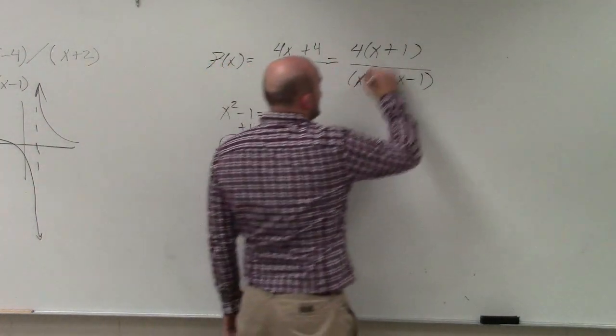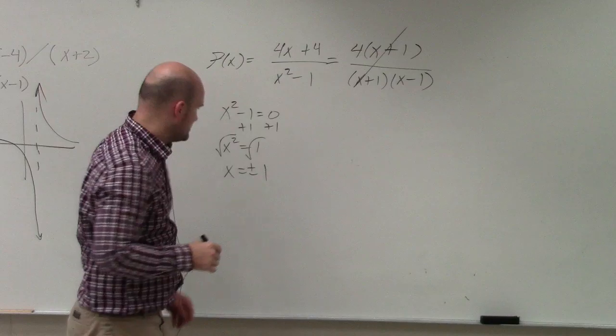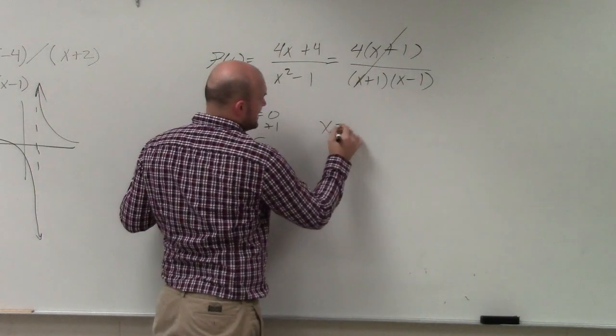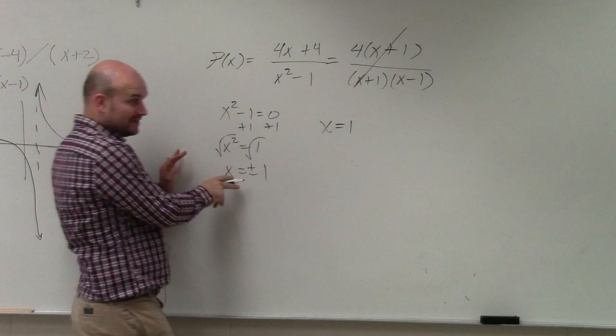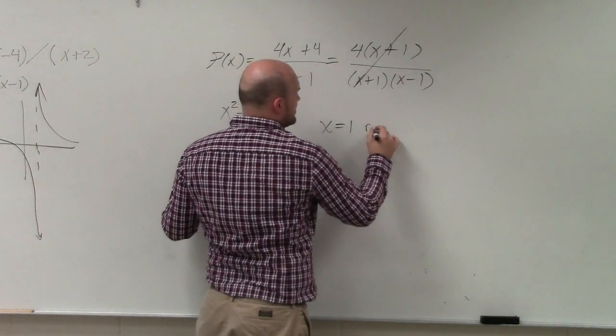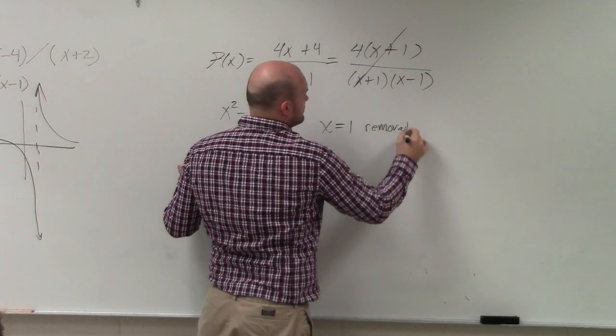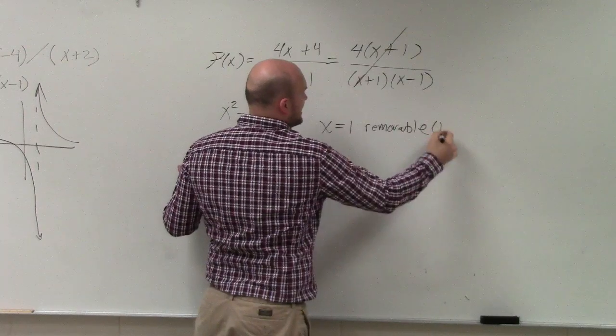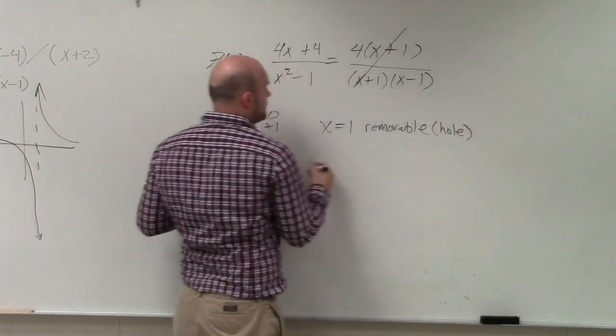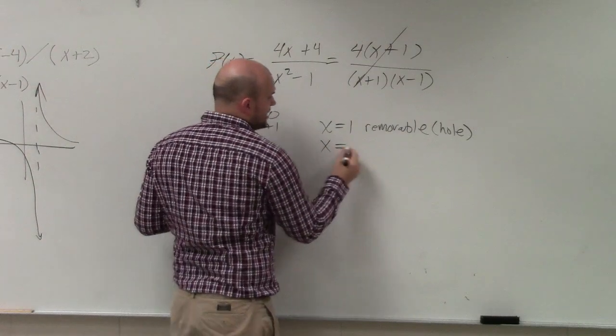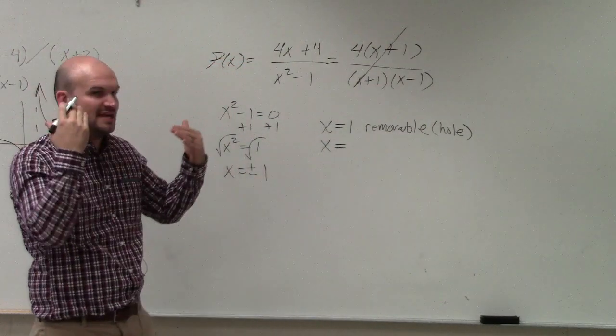Now you guys can see that the x plus 1 divides out. So I say x equals 1 is still a discontinuity, but it's a removable, because it's a hole.